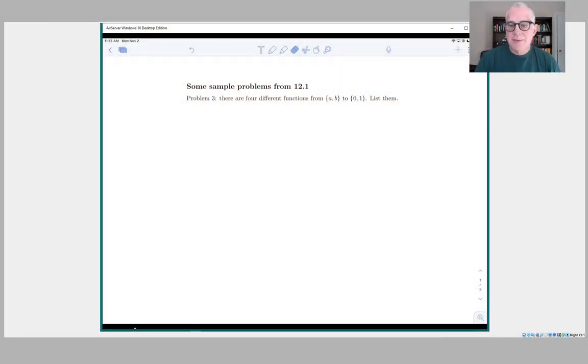I think it's problem three and the problem says that there are four different functions from the two element set AB to the two element set 01 and we're supposed to list them. But before diving into that I thought it would be interesting first to ask about relations.